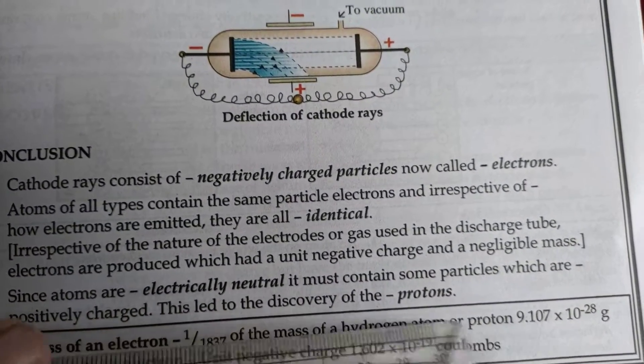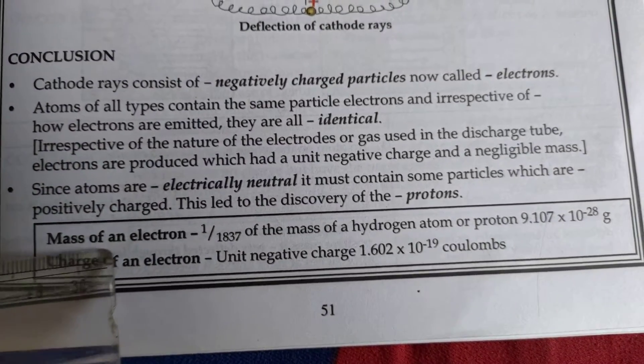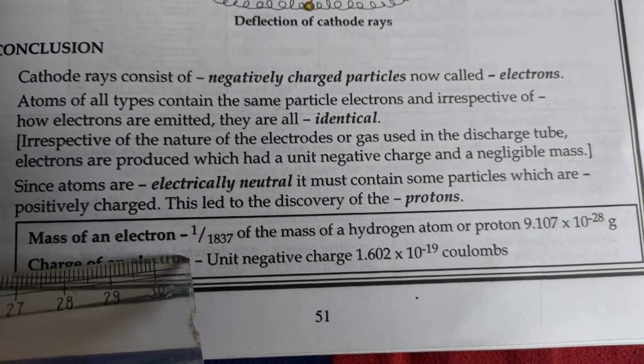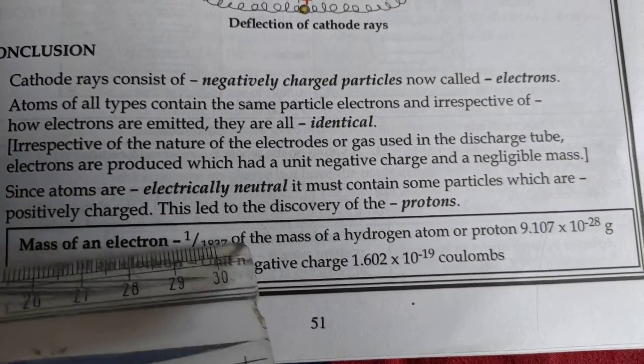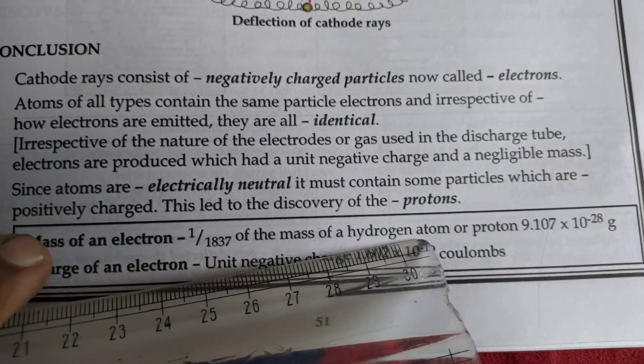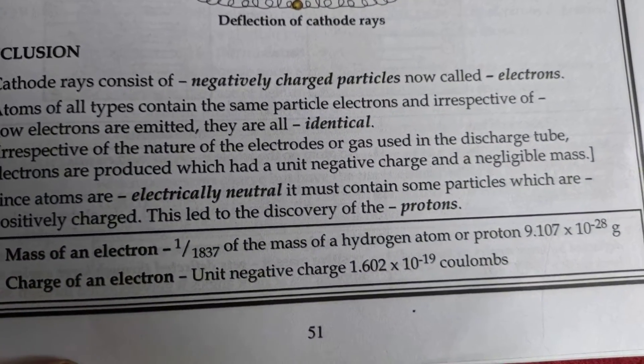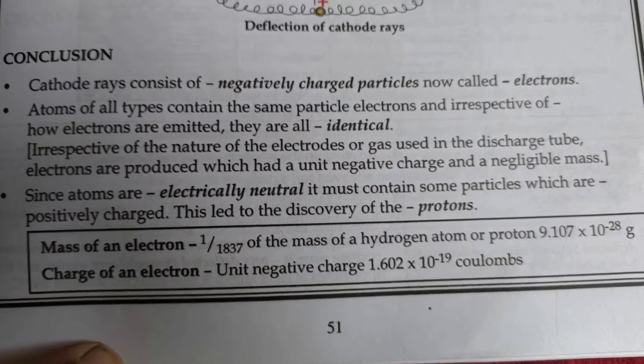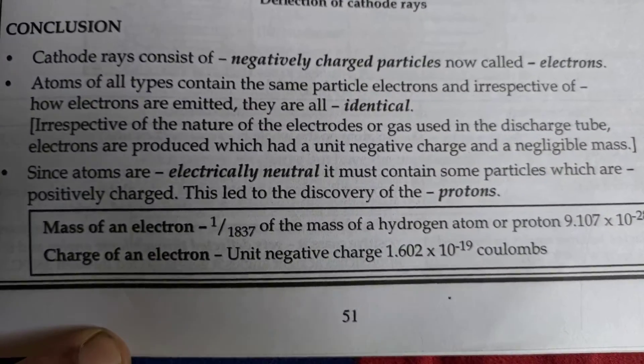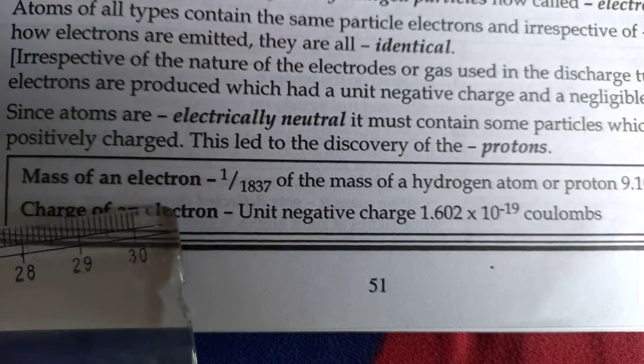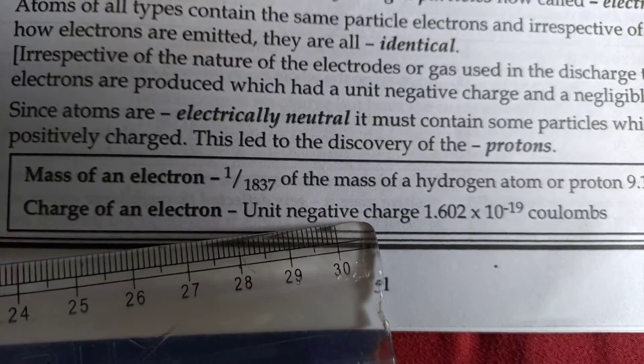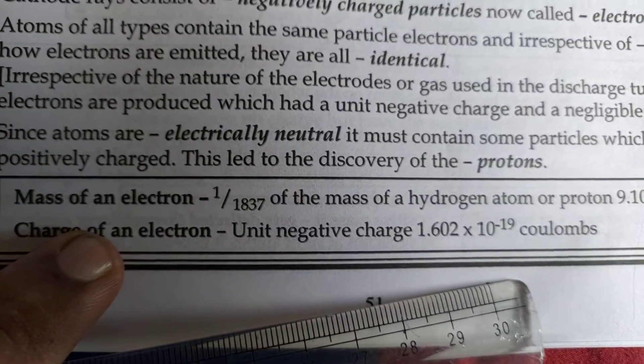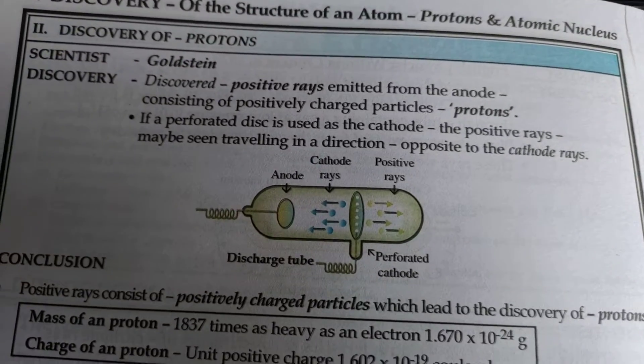Now what was interesting was that it was found that the mass of one electron is approximately 1 by 1837th time of the mass of a hydrogen atom, which is approximately very small. And as a result of this, the weight of electron is considered to be absolutely null. The charge on an electron is basically a negative charge comprising of around 1.6 into 10 to the power minus 19 coulombs. That was the discovery of electron.